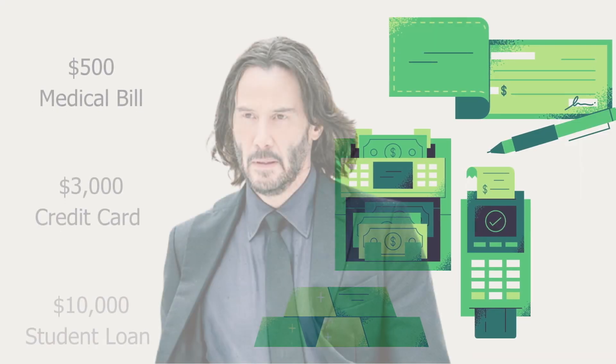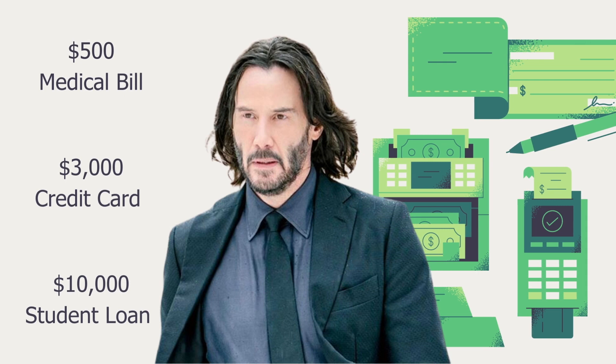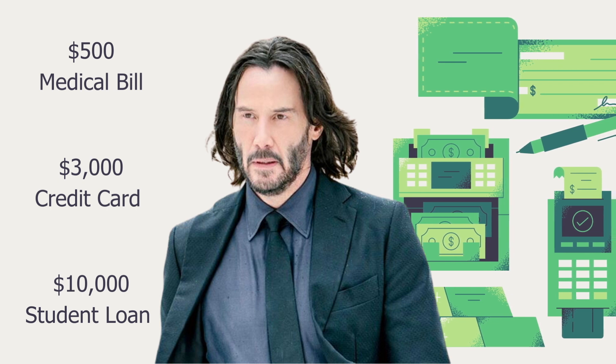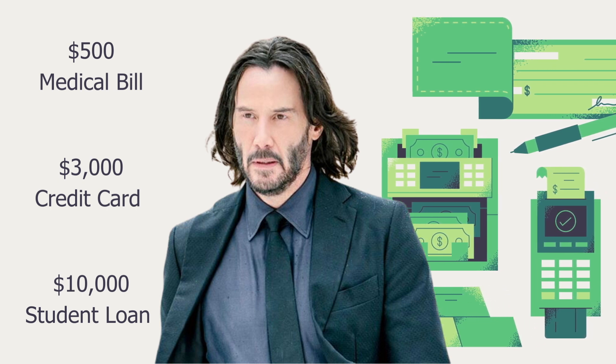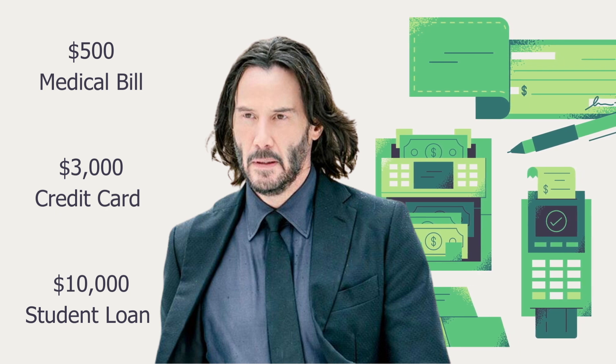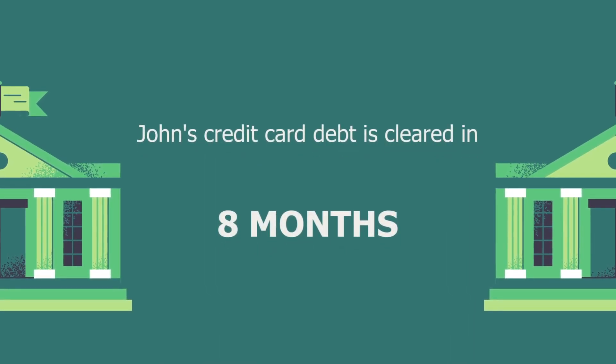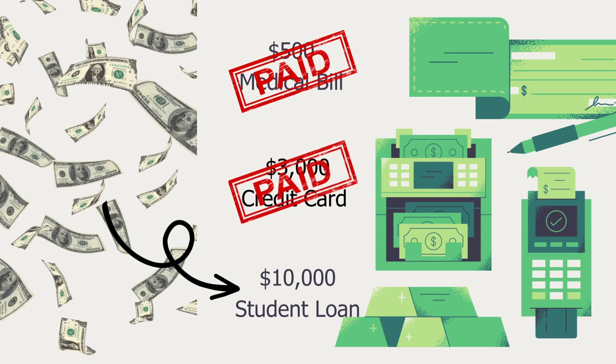The debt snowball method's psychological benefits cannot be understated. As individuals see smaller debts getting paid off quickly, they experience a sense of accomplishment and motivation to continue the path of debt reduction. This emotional boost creates momentum, making it easier to stay committed to the process. For example, John has a $500 medical bill, $3,000 in credit card debt, and $10,000 in student loans. Even though the student loan has the highest interest rate, John starts with paying off the medical bill first. Within a month, he pays it off using savings and extra income, which inspires him to attack the credit card debt more aggressively. In just eight months, he eliminates the credit card debt.